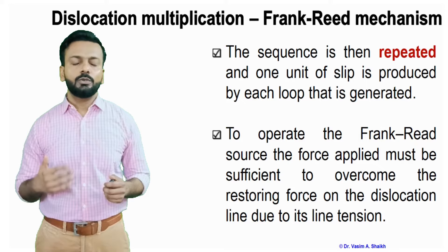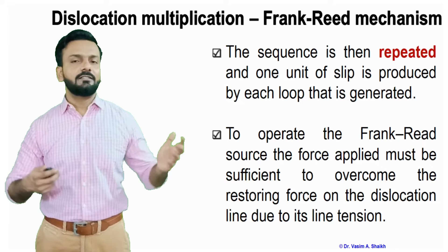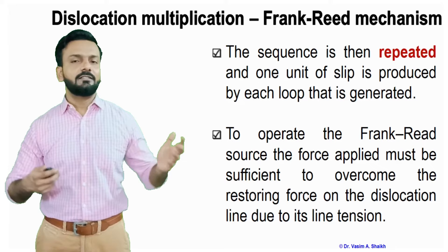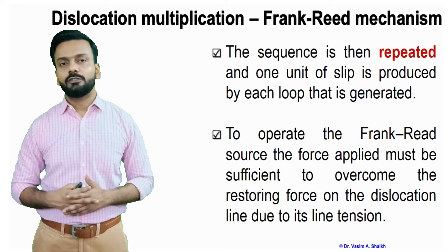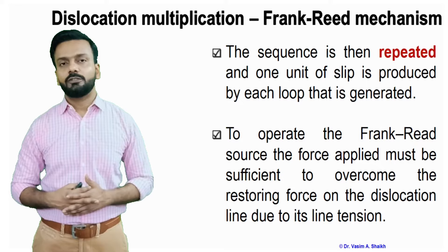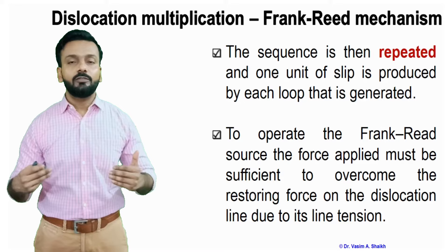You have to increase the stress — increase the amount of load you are applying. Only then will the dislocation multiply because of the Frank-Reed mechanism. As seen in the earlier image, the dislocation will form circles or loops and keep multiplying, and you will need more load for deforming the material. That is the meaning of dislocation multiplication: dislocations are multiplying and you need more and more force.